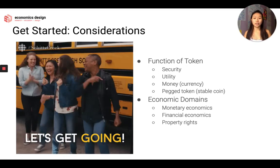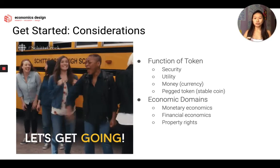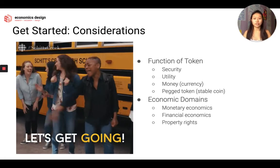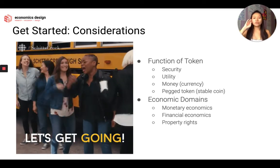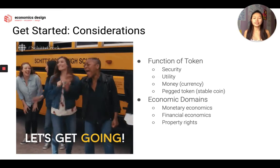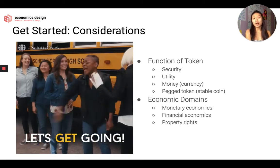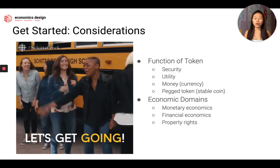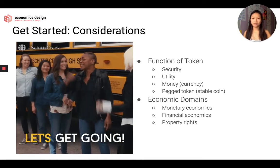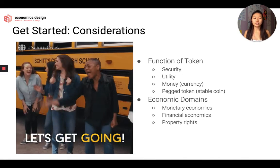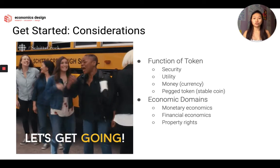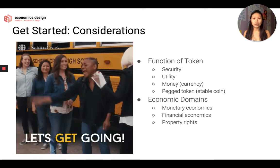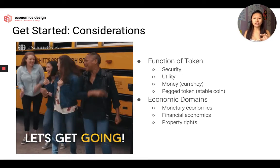We also look at the different economic domains. We have monetary economics, which builds a big part of the foundations of token design because the foundations can be applied across different types of functions quite easily. We have financial economics, which is more relevant to securities and parts of money — this is also more involved in the DeFi movement and looking at new creative use cases of financial economics in the blockchain space. And lastly, property rights — rights attached to your tokens. I put these three down because if you want more information or want to adapt these foundational ideas into your token design, you can look deeper into these three domains.